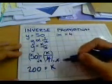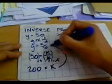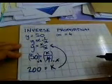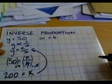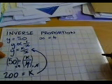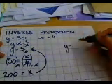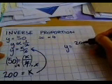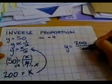Now that 200 equals k, we can substitute that back into the original equation to write a new equation with the constant in it. So y now equals 200 over x.